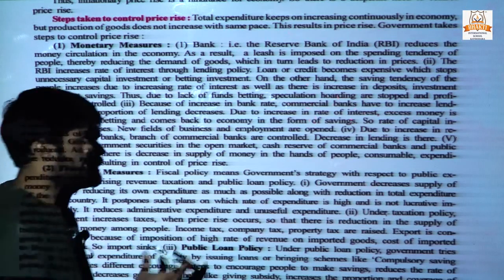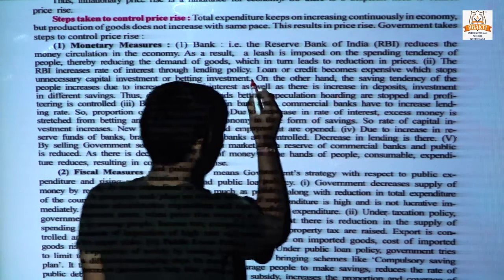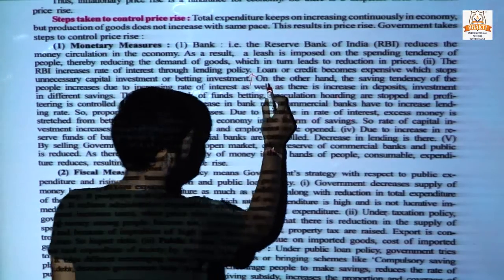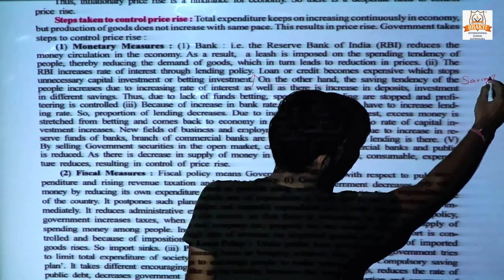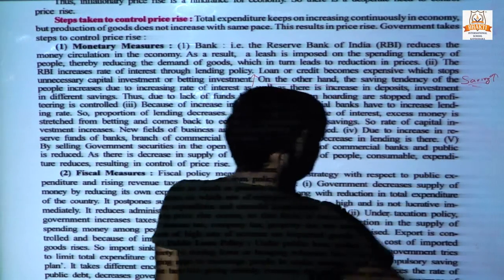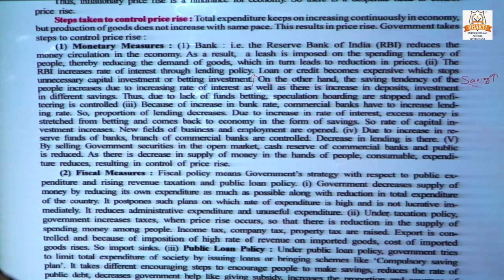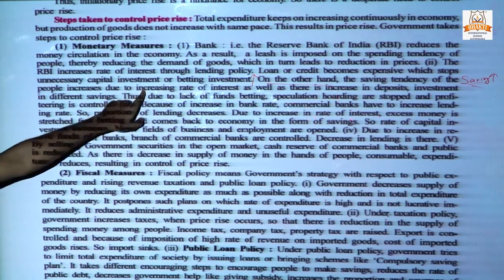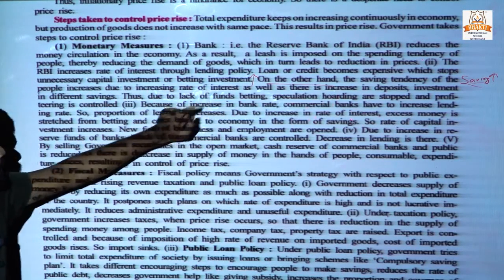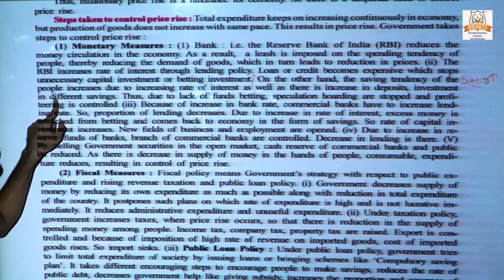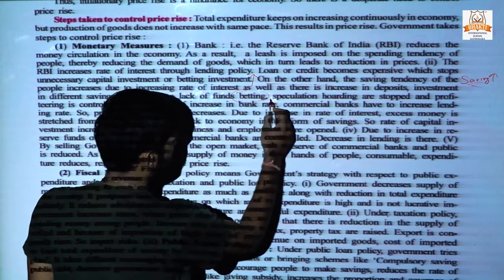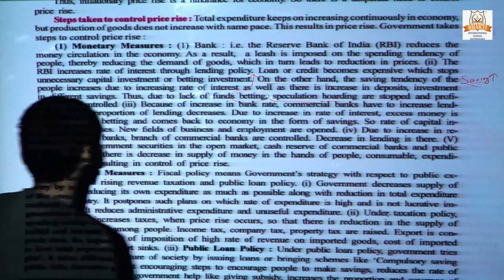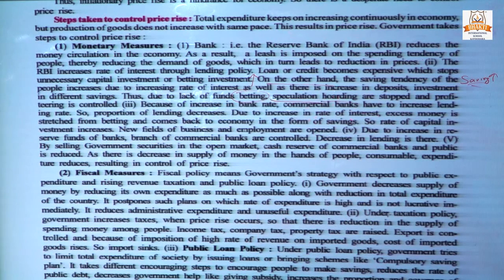Government and RBI will increase the lending rate. On the other side, the interest on saving deposits and saving accounts will also increase. So more people will save and deposit their money in banks. They can also invest in different savings schemes. This will reduce betting, speculation, hoarding, and other profiteering activities.